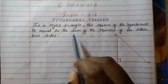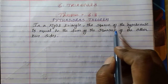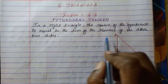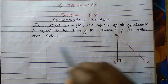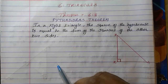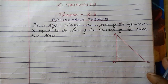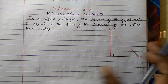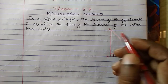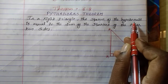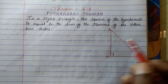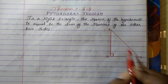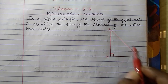In a right triangle, the square of the hypotenuse is equal to the sum of the squares of the other two sides. Basically, the hypotenuse means the side that has a slope — that is called the hypotenuse.